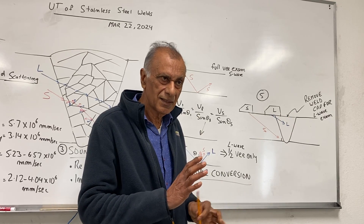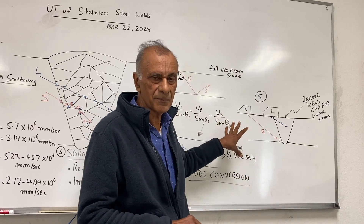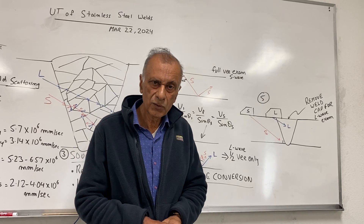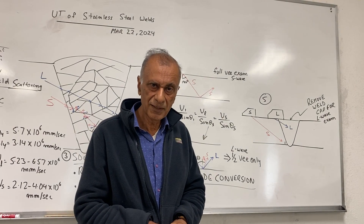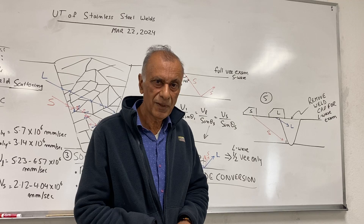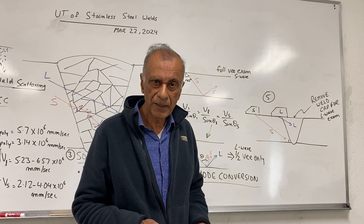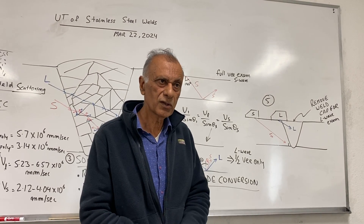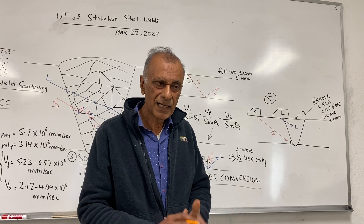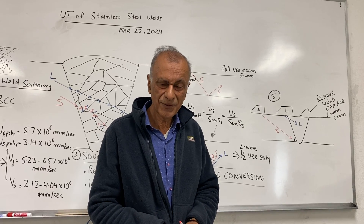This has been a brief overview of stainless steel weld inspection for basic pipes. In the next lecture, we will cover how to set up the calibration sensitivity, because setting it up for stainless steel welds is not the same as for shear waves — where we typically use 10% notches or side-drilled holes. For stainless steel welds using both L-waves and shear waves, the calibration process is more involved, and we will discuss that in the next lecture. Thank you very much.